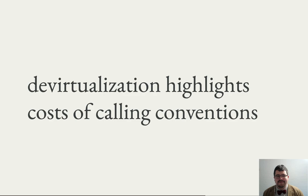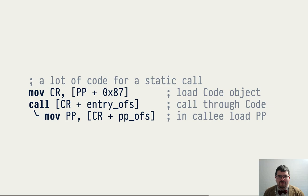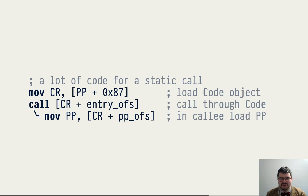Once we had TFA up and running, we discovered that it devirtualizes a lot of method calls. And that highlighted an inefficiency introduced when we made code objects relocatable. This is how a static call looks like generated by the Dart VM compiler at that point: it needs to load the code object, then from the code object get the entry point to call, and then in the executable code load the pool pointer from the code object. That's a lot of loads and indirect calls for something that is essentially a static call to a known target.